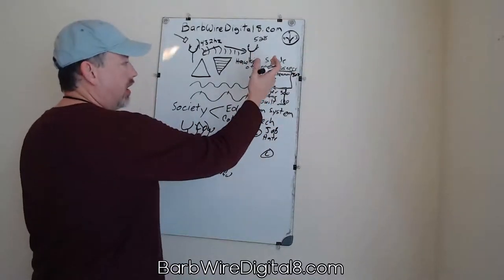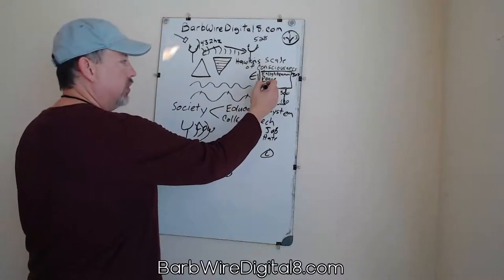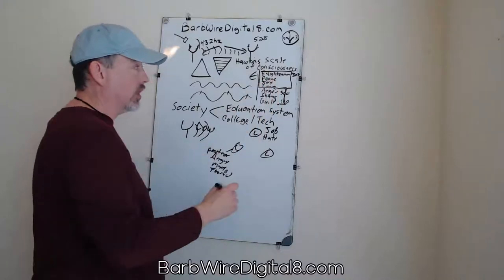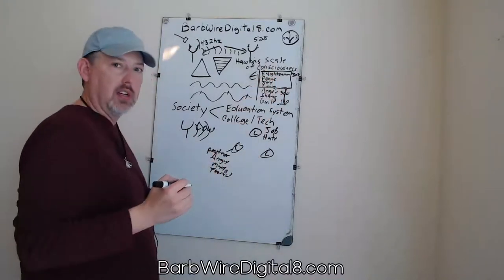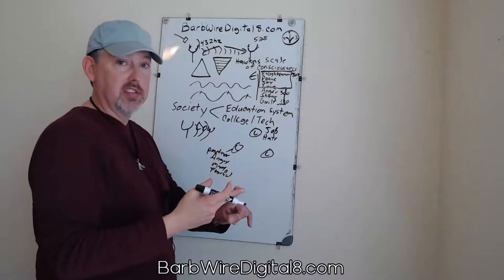The higher you go up in the scale and you get into peace, joy, love, and enlightenment, you're going to attract more peace, love, and joy. Well, what are the things that give you peace, joy, and love? Wealth, health, and relationships.